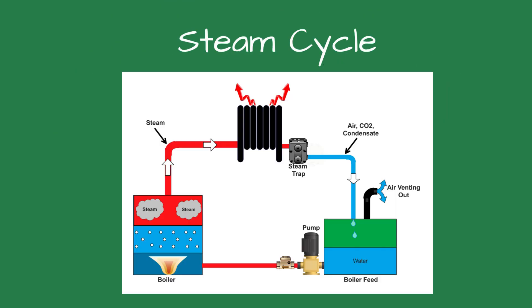The steam cycle, a fundamental process in steam systems, begins with water being heated inside the boiler. As the water reaches a certain temperature, it transforms into steam, carrying both sensible and latent heat. Sensible heat, measurable with a thermometer, and latent heat, the heat required for a change of state, are crucial components of this process.